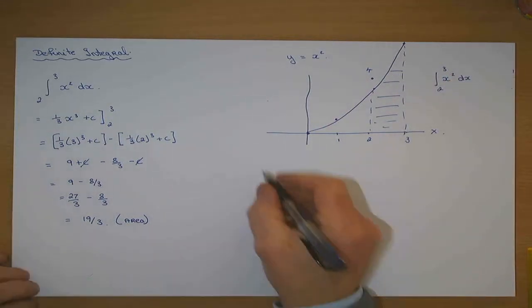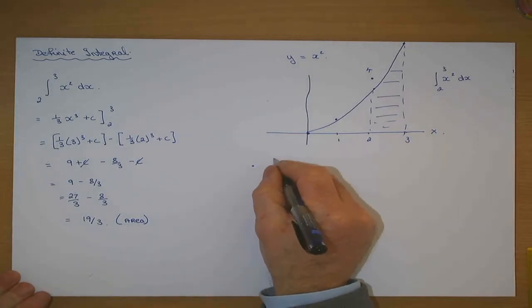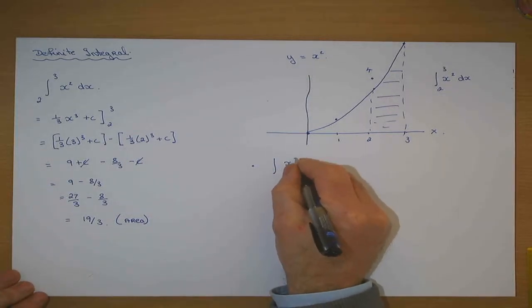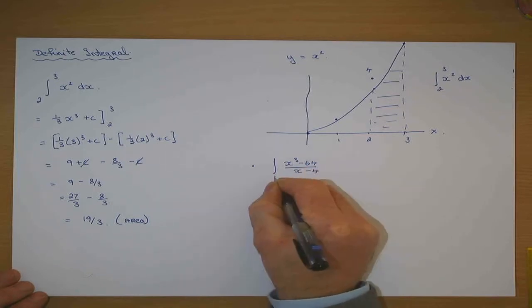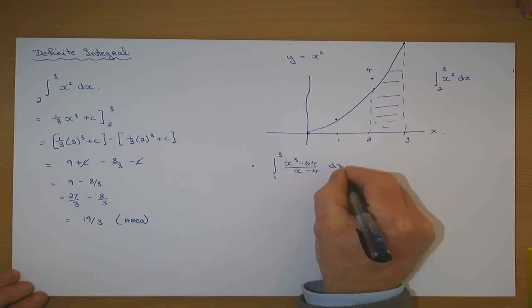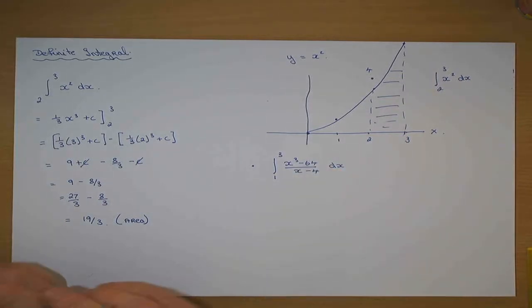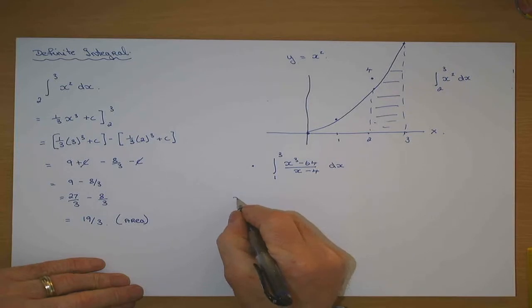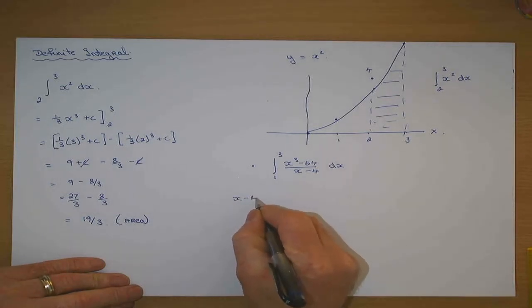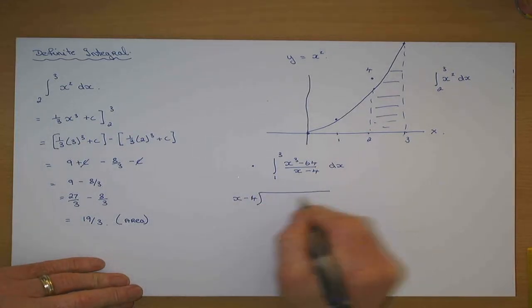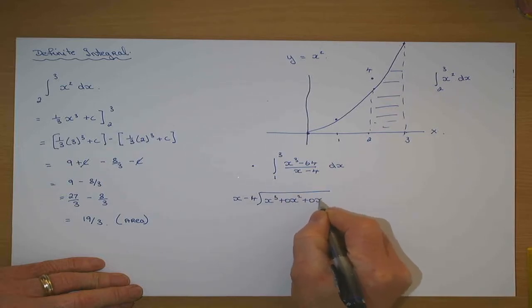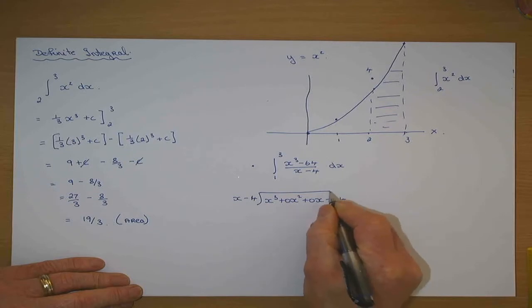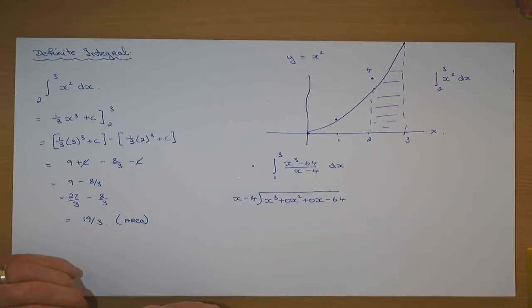Today I just want to teach you how to do the definite integral. If I integrated x cubed minus 64 over x minus four, from one to three dx, I have to integrate a quotient. How do you integrate a quotient? You divide. So you get x minus four and divide it into x cubed — no x squared term, no x, minus 64. Of course I could have factorised the top if I wished.